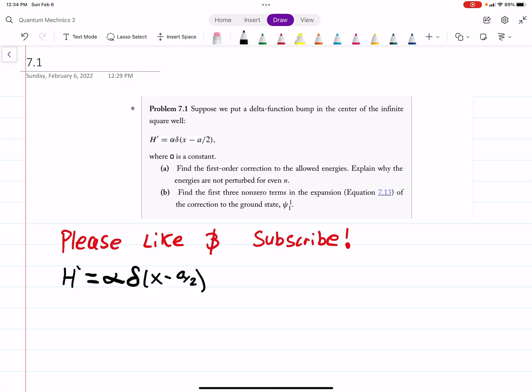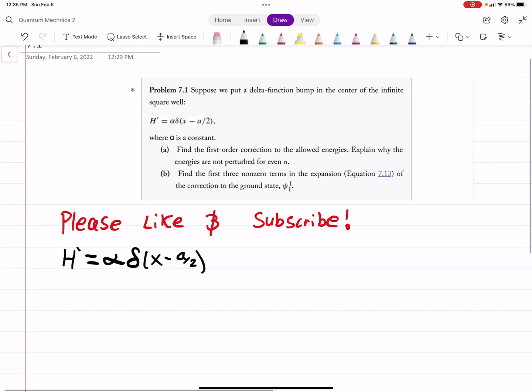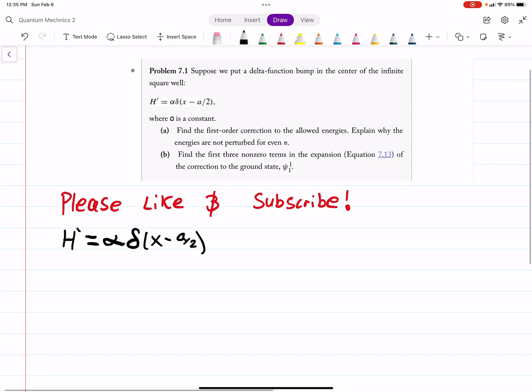Okay, so this is problem 7.1 out of Griffith's Introduction to Quantum Mechanics, edition 3. There's a few more problems from chapter 6 that I want to go through, but I also want to touch on chapter 7 since my exam's also on chapter 7, and that's perturbation theory. If you wouldn't mind, please like and subscribe, I'd appreciate that. It helps. Let's get started.